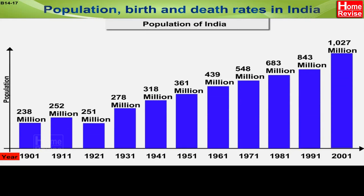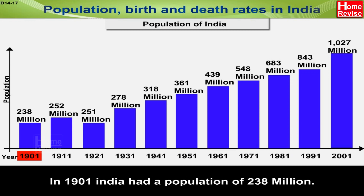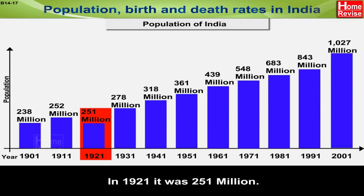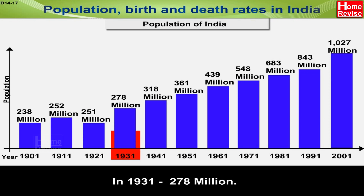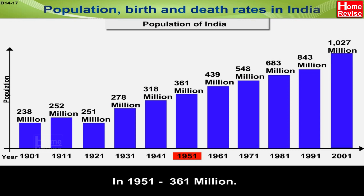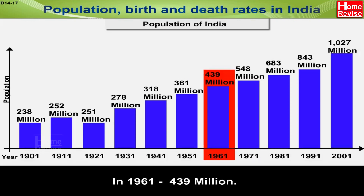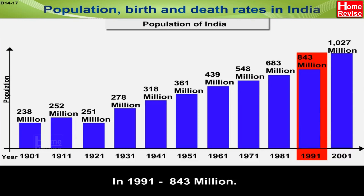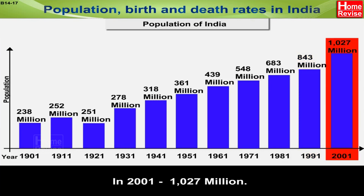India's historical population figures: 238 million in 1911, 252 million in 1921, 251 million in 1931, 278 million in 1941, 318 million in 1951, 361 million in 1961, 439 million in 1971, 548 million, then 683 million in 1981, 843 million in 1991, and 1,027 million in 2001.